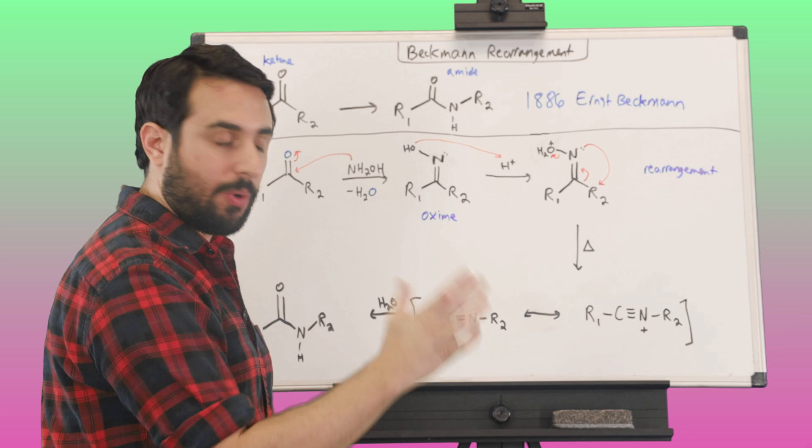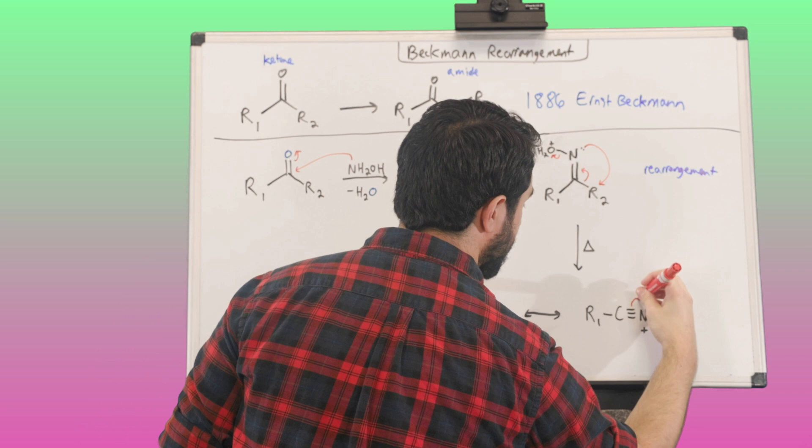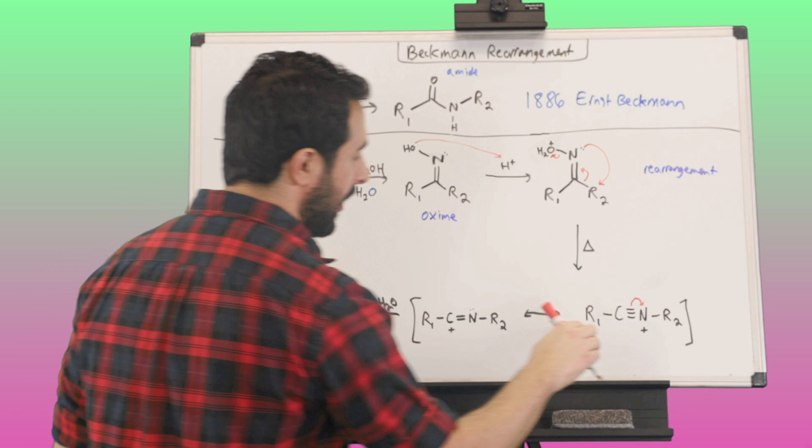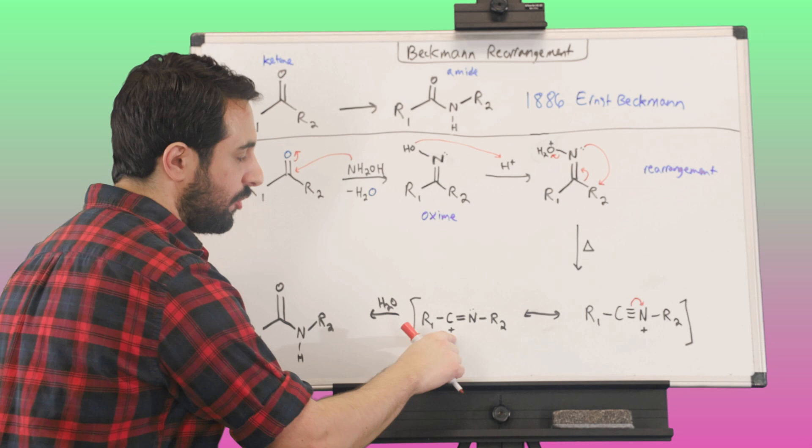...this has a formal positive charge here. We know that carbon is more electropositive. It's a little more favorable for carbon to be positively charged than nitrogen. And so we can take one of these pi bonds, put it onto nitrogen, thereby putting the positive charge over onto carbon. These are two resonance structures.